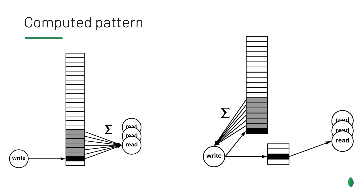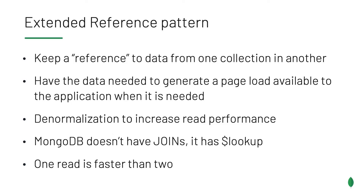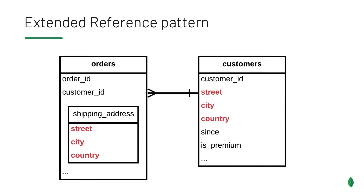The extended reference pattern keeps a reference to data from one collection in another collection. This is important because in MongoDB, you want the data needed to generate a page available when you're generating that page. Extended reference is very useful because it keeps that information available to the application right when it needs it. This does require denormalization — we're denormalizing to increase read performance. MongoDB does not have joins; we have $lookup, but we're trying to make things as fast as possible. Every additional read adds latency to our round trip. Two reads is slower than one read, so we want to avoid $lookup. Visually, extended reference literally means copying data from one collection to another.